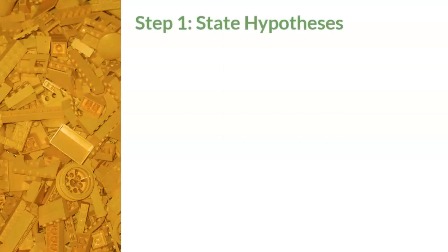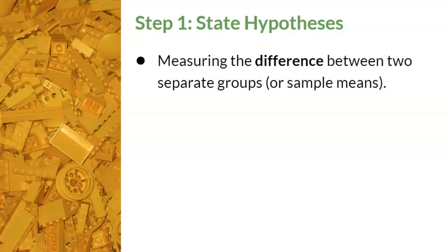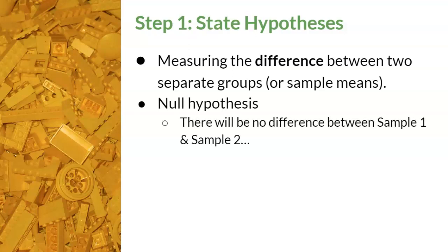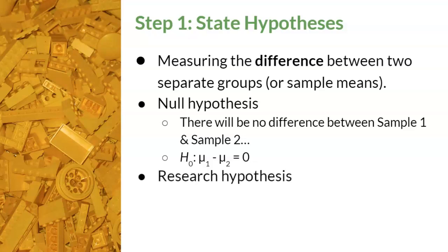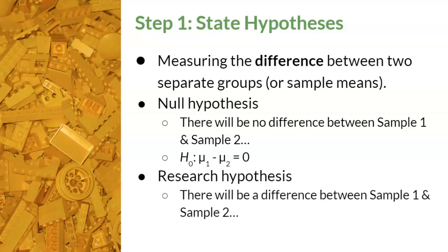Step one — state hypotheses. Since we are comparing the difference between two groups, we measure the difference between the sample means by subtracting them. The written null hypothesis must include the word 'difference.' If there is truly no difference, then mu subscript one minus mu subscript two equals zero — for example, 20 minus 20 equals zero. The research hypothesis reflects that there is a difference, so mu subscript one minus mu subscript two will not equal zero.